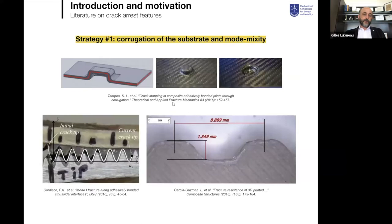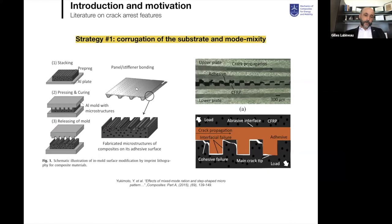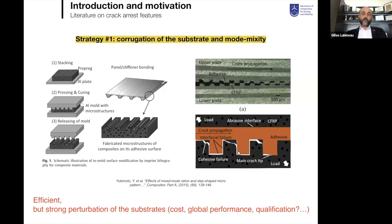How do you reduce the brittleness of joints? I want to quickly review four strategies in the literature. The first is to introduce corrugated substrates — as in the work of Cordisco — introducing geometric fluctuations to vary crack propagation modes and increase crack propagation resistance. This can be quite aggressive, as in the work of Yukimoto, where corrugating CFRP substrates introduces not only mode mixity but also interlock, causing crack propagation to break part of the substrate — increasing resistance but strongly perturbing the substrate.